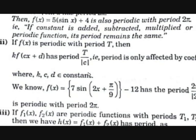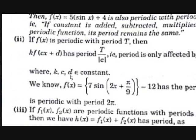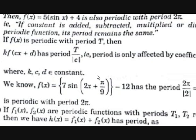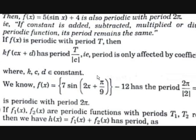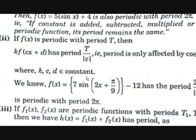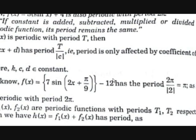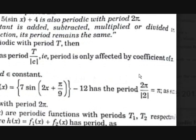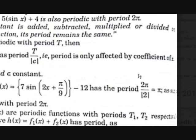For example, f(x) = 7·sin(2x + π/9) - 12 has period 2π / 2 = π. Since sin is raised to an odd power it has period 2π, and the coefficient of x is 2, so the period becomes 2π / 2 = π.